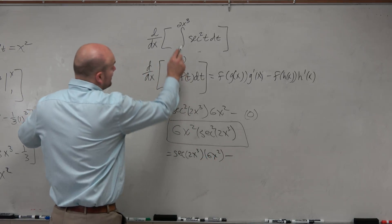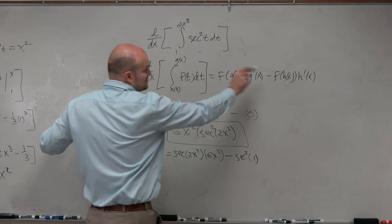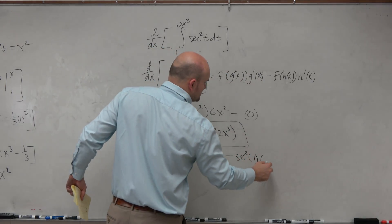minus secant squared of 1, times the derivative of 1, which is 0.